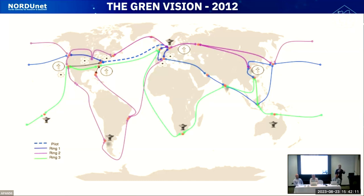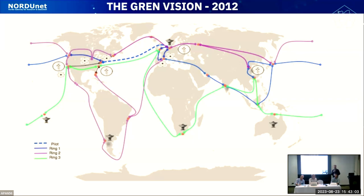Between regions, the goal was to share capacity and coordinate how to deploy links — who's buying which links, making sure they complement each other on different cable systems and aren't fragile. That's the ambition of how to realize the Global Research and Education Network. We've come a long way. The plan was a slow start with a few pathfinders — a couple of groups trying this out. One group was going to try this across the North Atlantic, something called ANA.